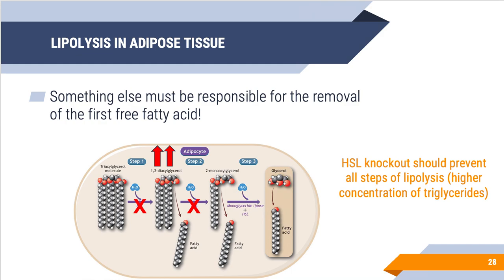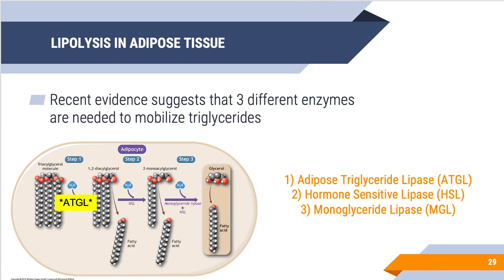We expected an increase in triglycerides following HSL knockout because we expected an inability to remove the first free fatty acid from triglycerides. However, we found a rise in diacylglycerol, meaning something else must be responsible for removal of that first free fatty acid, but hormone-sensitive lipase is definitely important for removal of the second free fatty acid — taking diacylglycerol and converting it to monoacylglycerol. Recent evidence suggests three different enzymes are needed to efficiently mobilize triglycerides: ATGL removes the first free fatty acid; HSL removes the second (diacylglycerol to monoacylglycerol); and monoglyceride lipase (MGL) catalyzes monoacylglycerol to just a glycerol backbone.